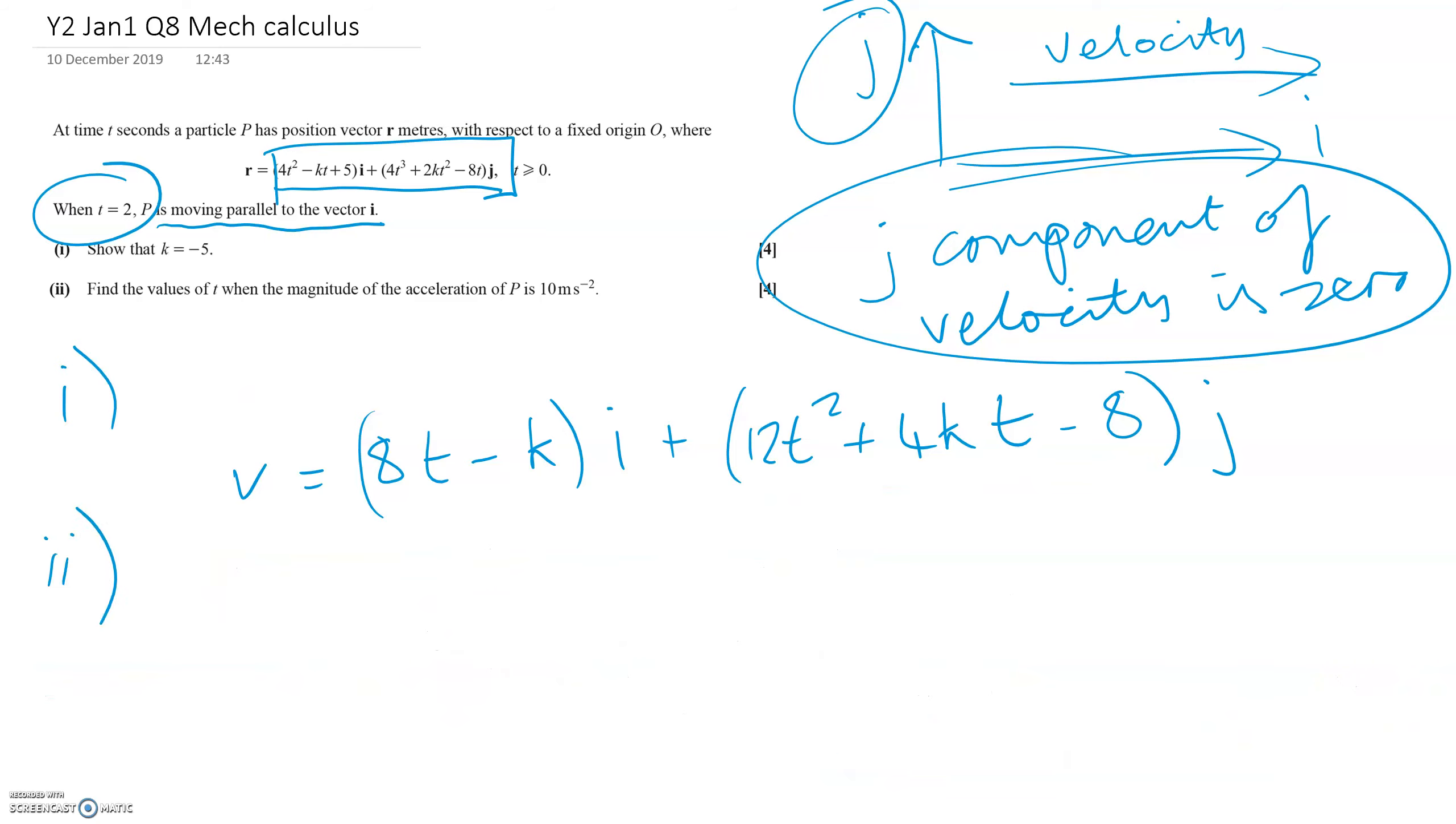In part two, it's about the acceleration. I've kept the velocity equation on screen because we need to differentiate that to get the acceleration. So the acceleration is 8I plus 24T plus 4K in the J component.